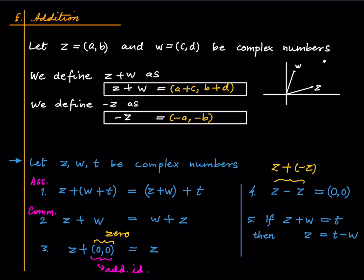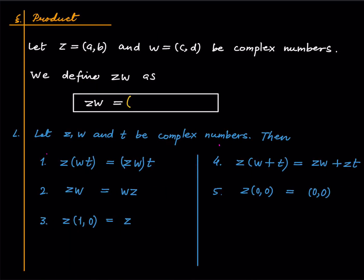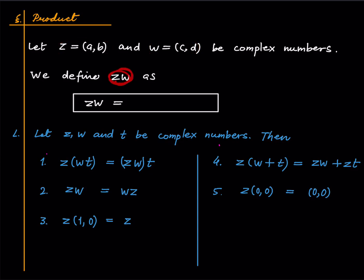If Z plus W is T, then Z is T minus W, and this is also immediate from our basic knowledge of real numbers. So there is addition on complex numbers, and there is also a product. Suppose Z is a comma b and W is c comma d; these are two complex numbers and we define the product of Z and W in the following way.